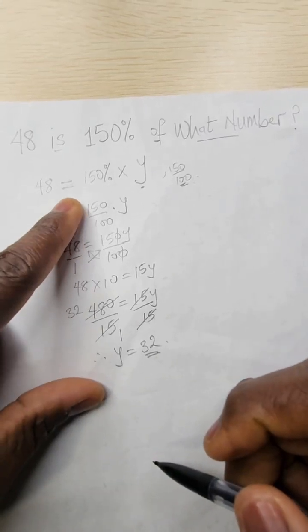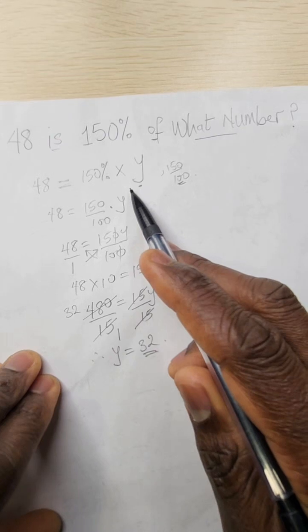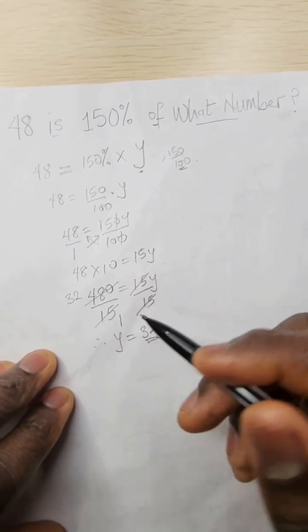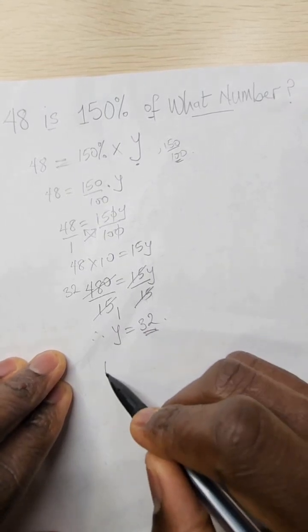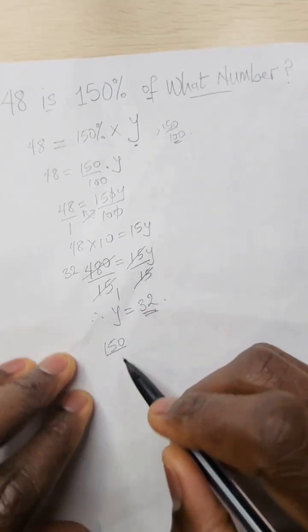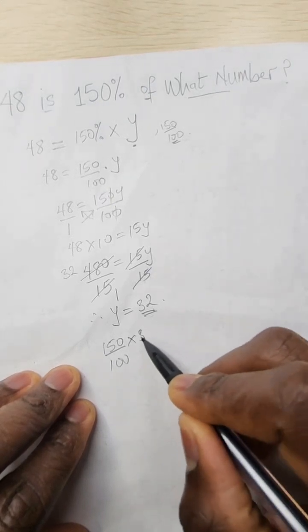So 48 is equal to 150% of 32. So we can actually try to prove that. So we have 150 over 100 times 32. What do we get?